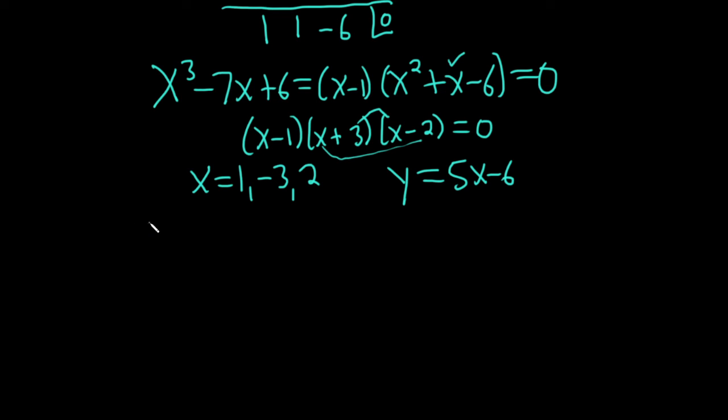When x is 1, we have y equals 5 times 1 minus 6, so negative 1. So when x is 1, y is negative 1. Our first solution is the ordered pair 1 comma negative 1.